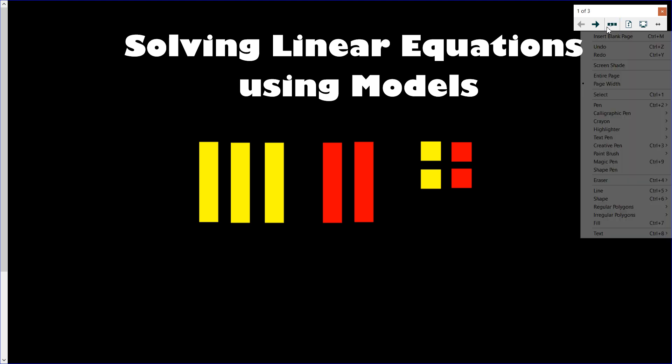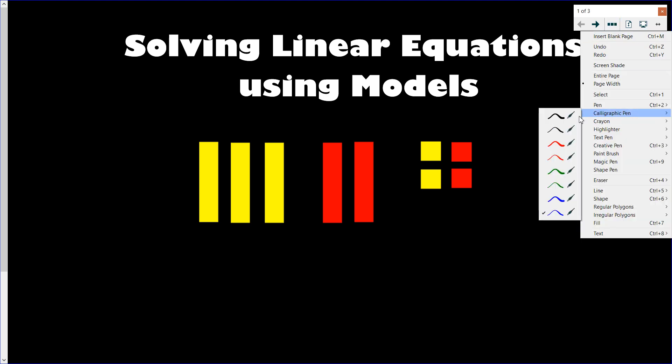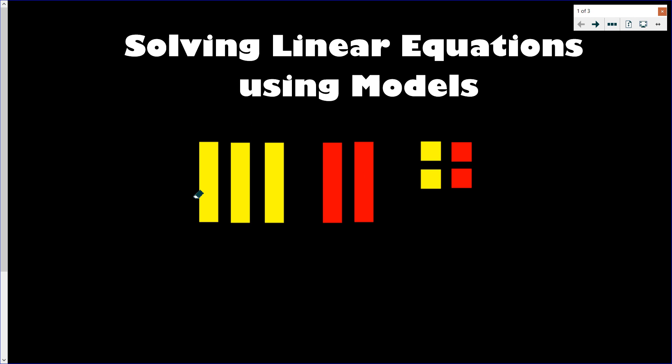So first things first, these are algebra tiles. These little squares represent some algebraic expressions. This yellow tile is usually used for x. For example, I have one, two, three of these yellow tiles that would represent 3x. The yellow being positive. This red guy here, these two red rectangles, would represent negative x. So if I have two of them, that means I would have negative 2x.